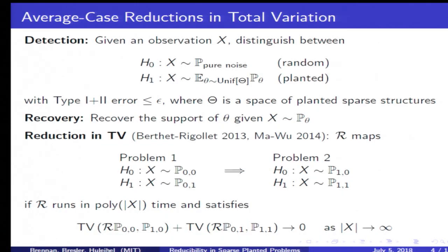Why is this the natural notion of an average case reduction? The reason is, if you have an algorithm which achieves a type 1 plus type 2 error of epsilon on problem 2, then composing this with R gives an algorithm A composed with R which achieves an asymptotic type 1 plus type 2 error of epsilon on problem 1. And also if A runs in polynomial time, then so does A composed with R.